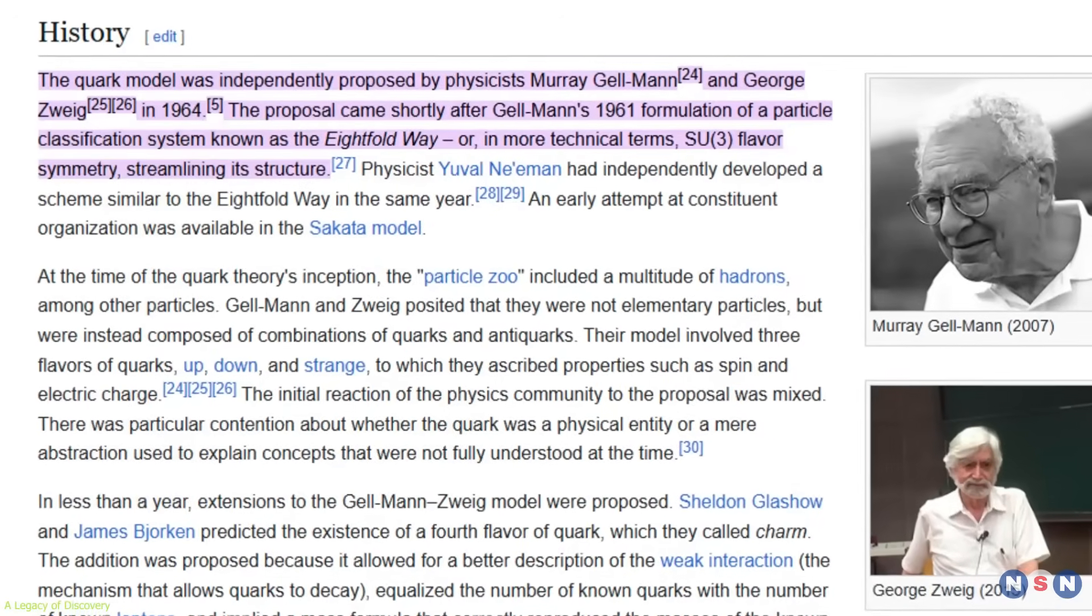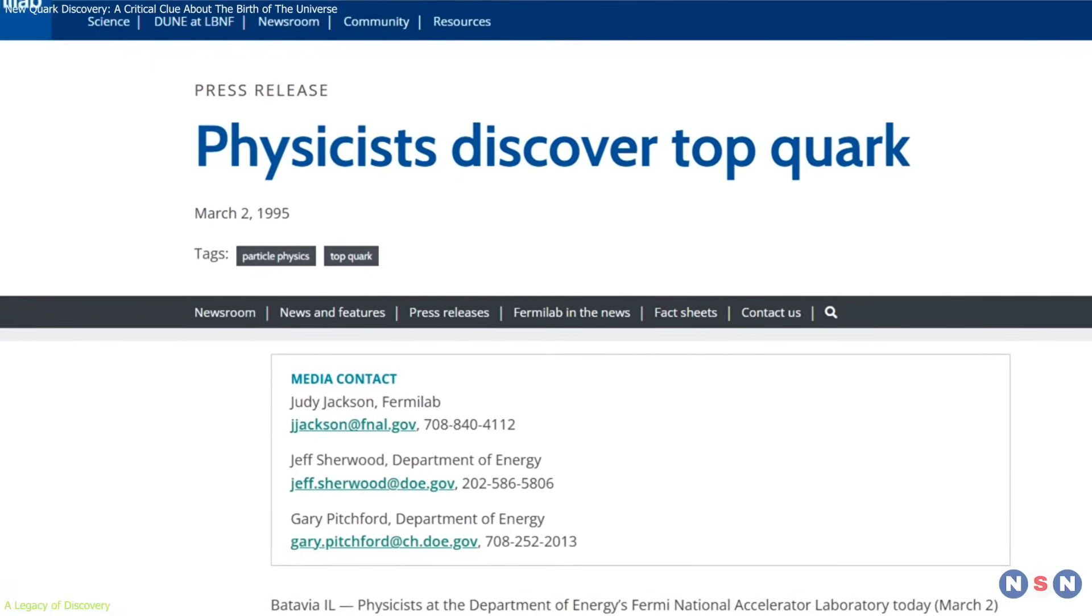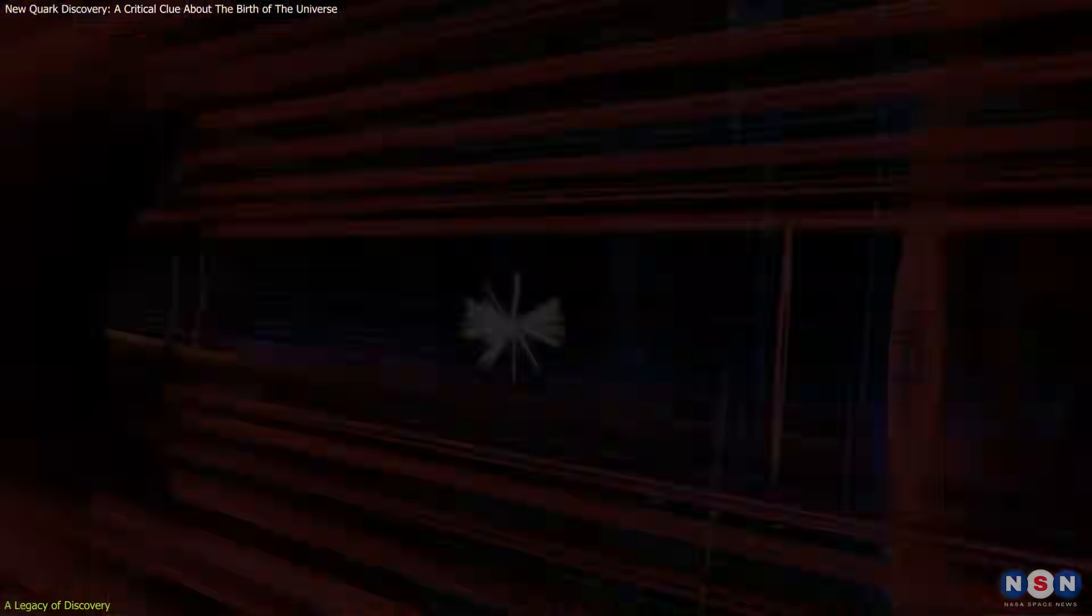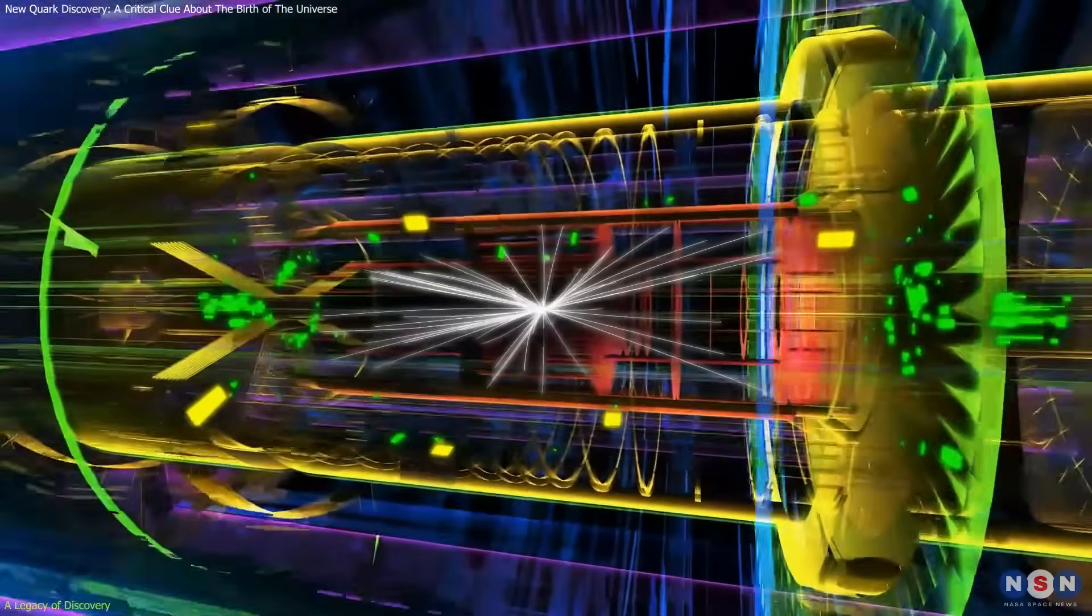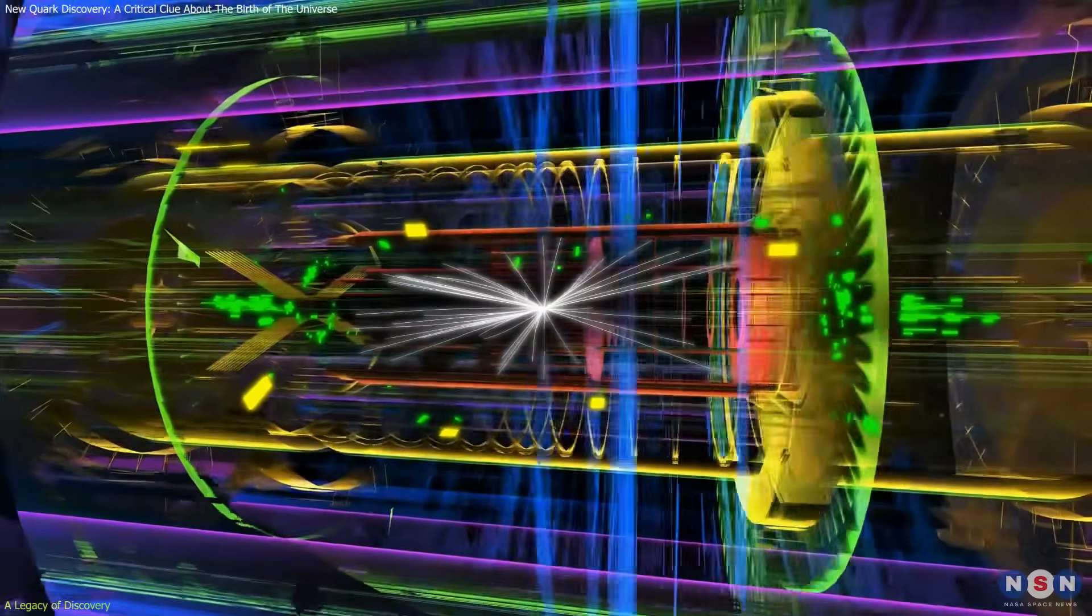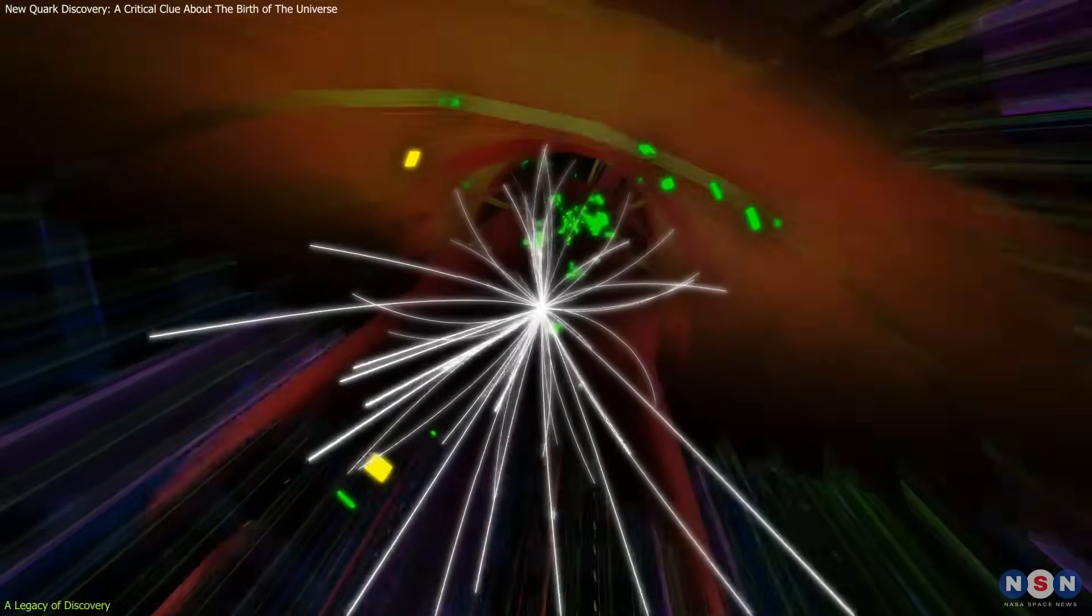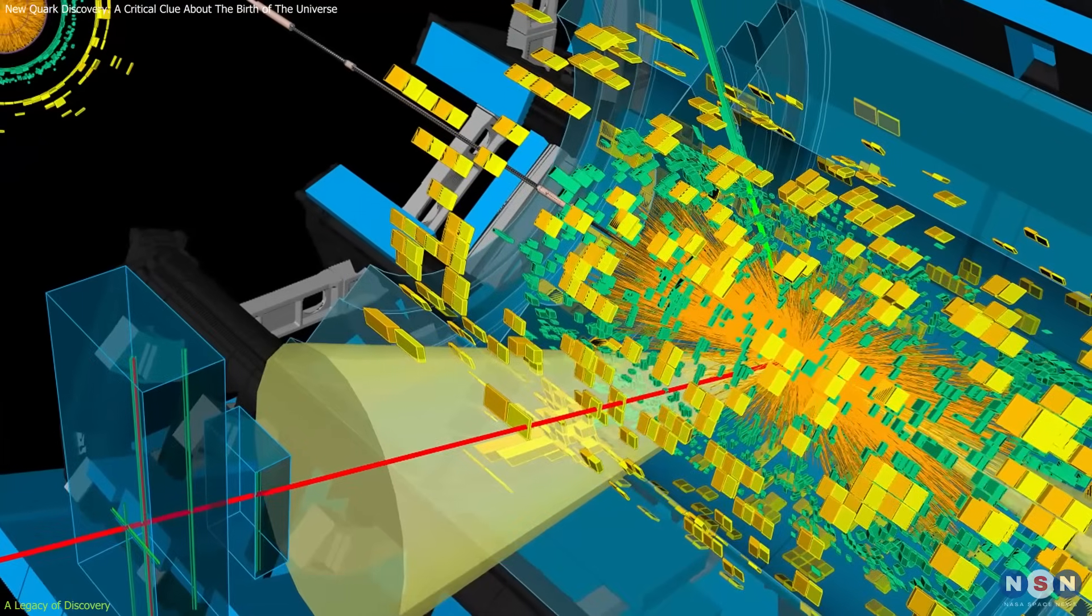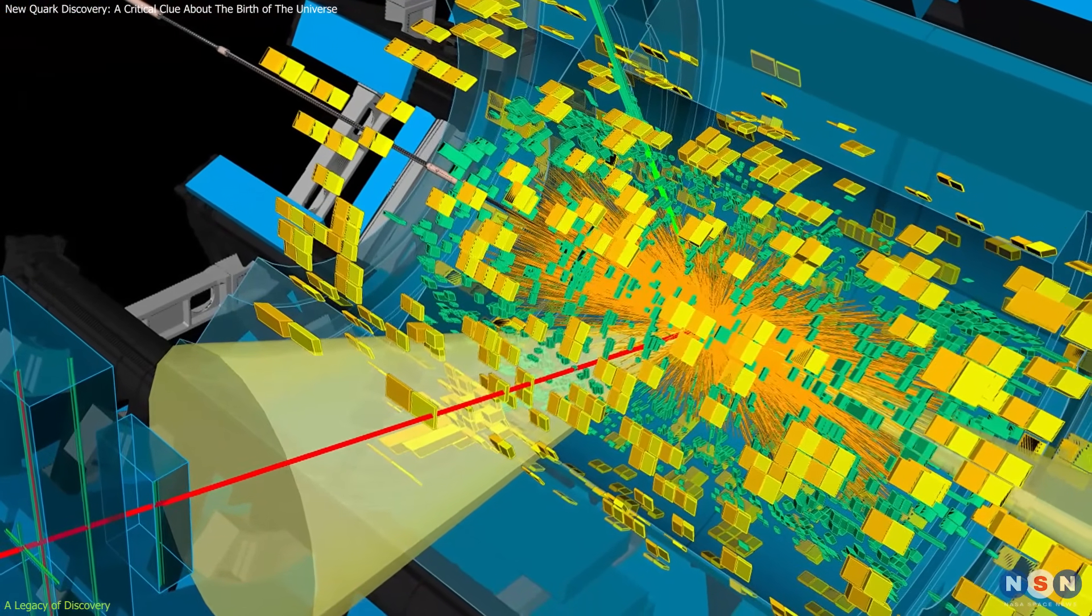The idea of quarks was proposed in 1964, but it wasn't until 1995 that the elusive top quark was finally discovered at Fermilab. Like today's breakthrough, that detection also relied on decay products and required five-sigma certainty. The journey from theory to observation took decades, and now we're pushing it even further by studying top quarks in environments that simulate the Big Bang.